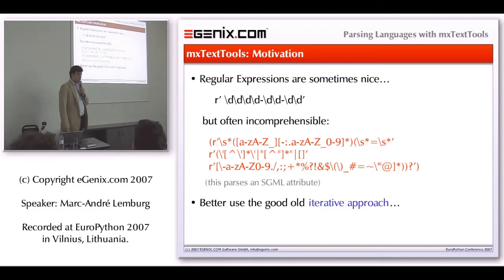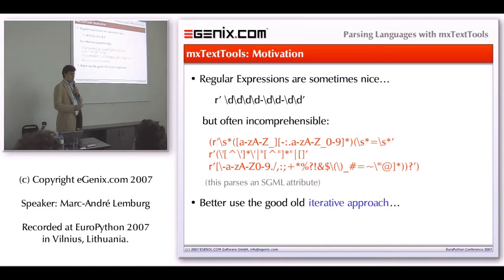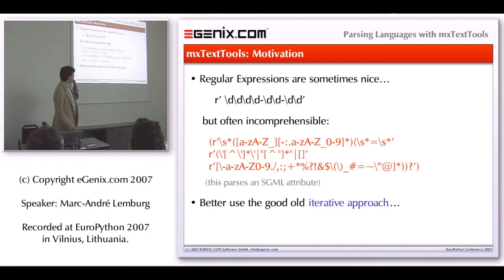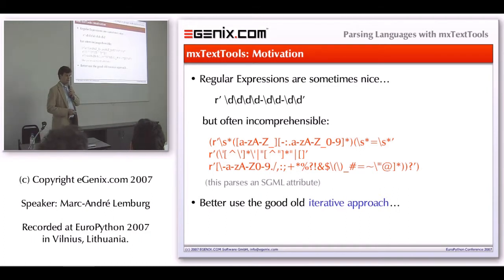What was the reason for writing NX Text Tools in the first place? I used to use regular expressions a lot, but eventually if you work with regular expressions, you find that at a certain point things get so complex that it simply becomes incomprehensible. For example, this is a regular expression I took from the SGML library — it's a regular expression for parsing an SGML attribute. If you look at it, you can't really see what it's doing, and what's even worse, you can't really make sure that it really parses what you want to parse. Regular expressions very often parse a lot more than intended. So I thought it's much better to use an iterative approach.